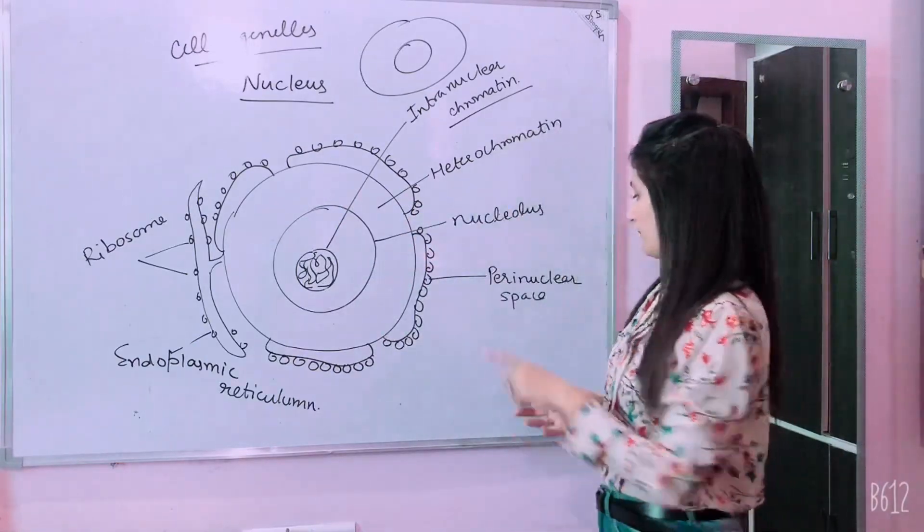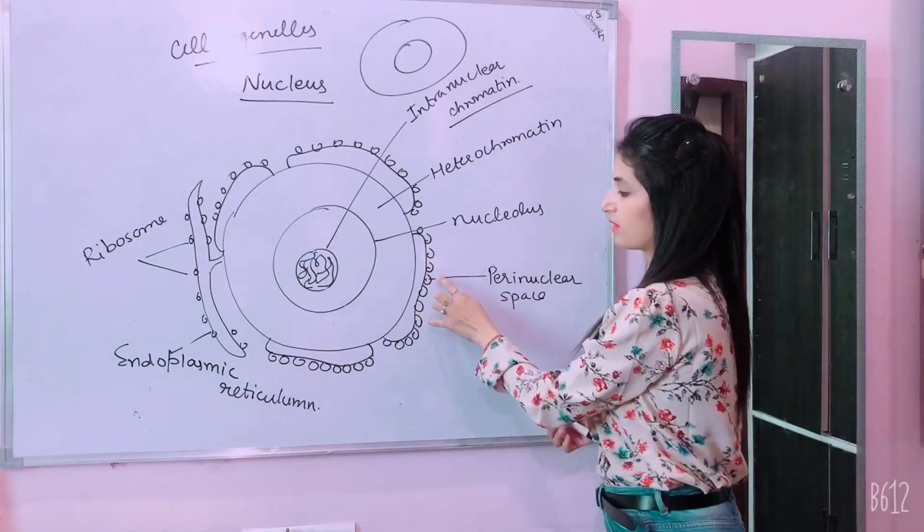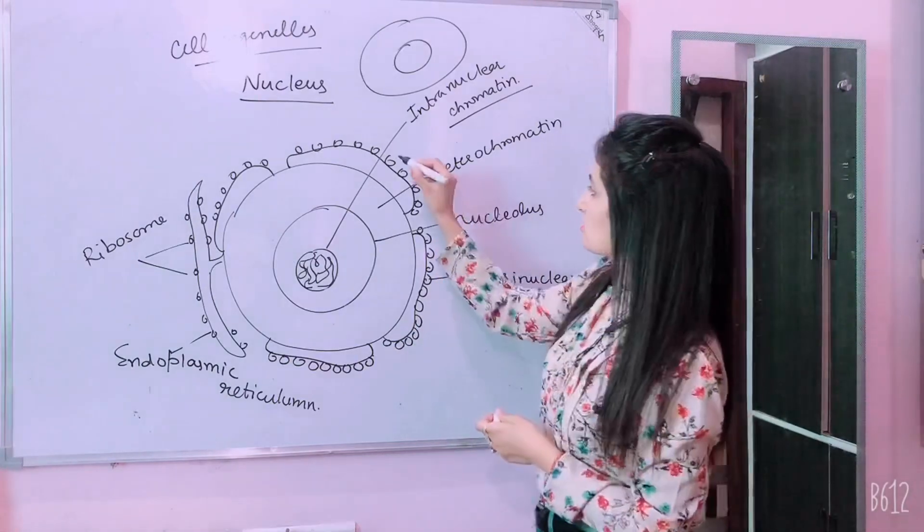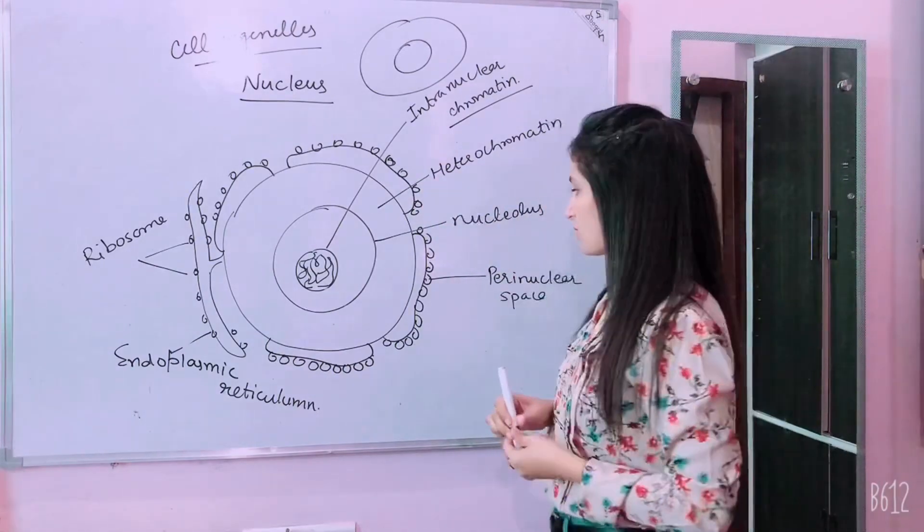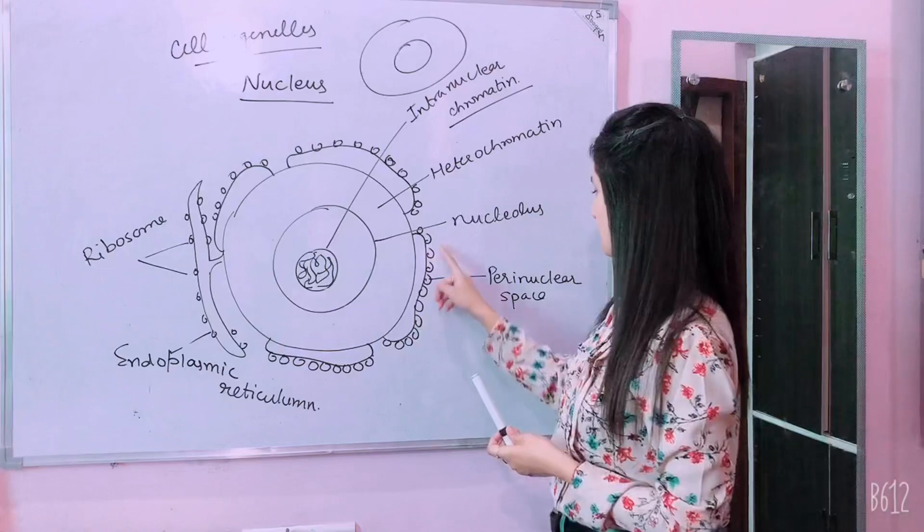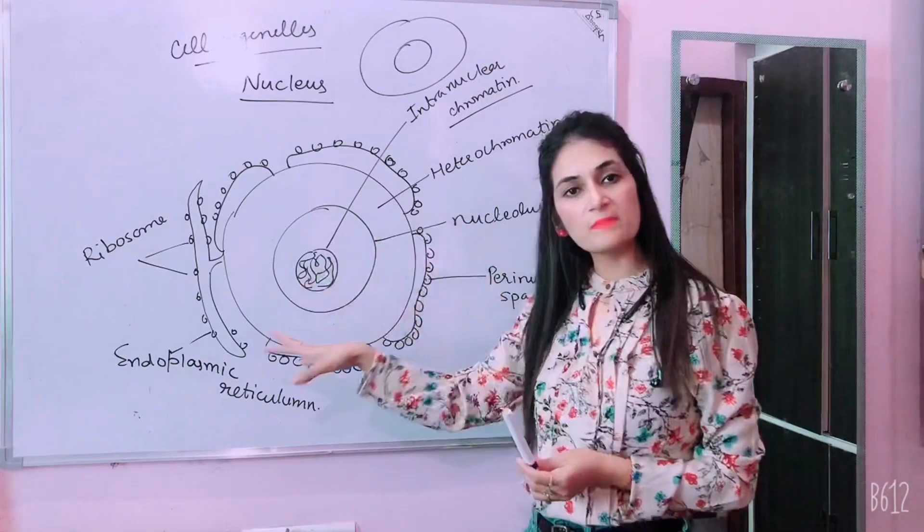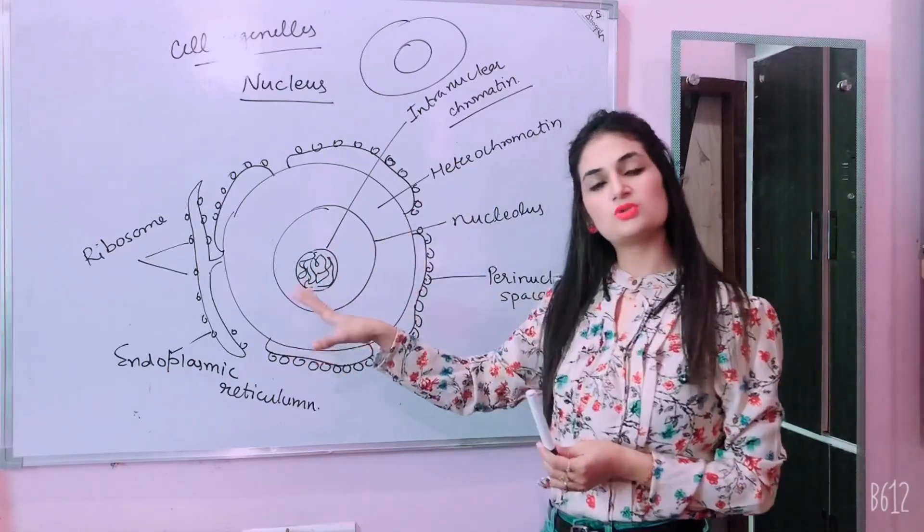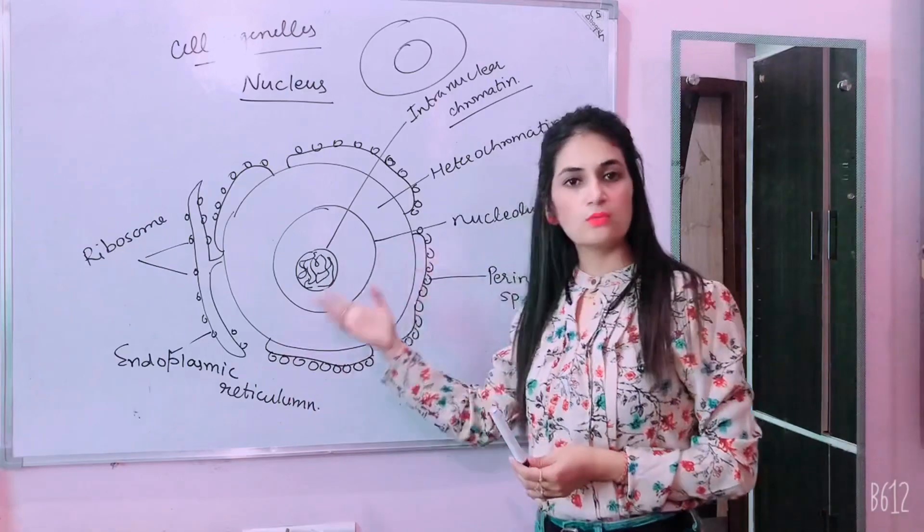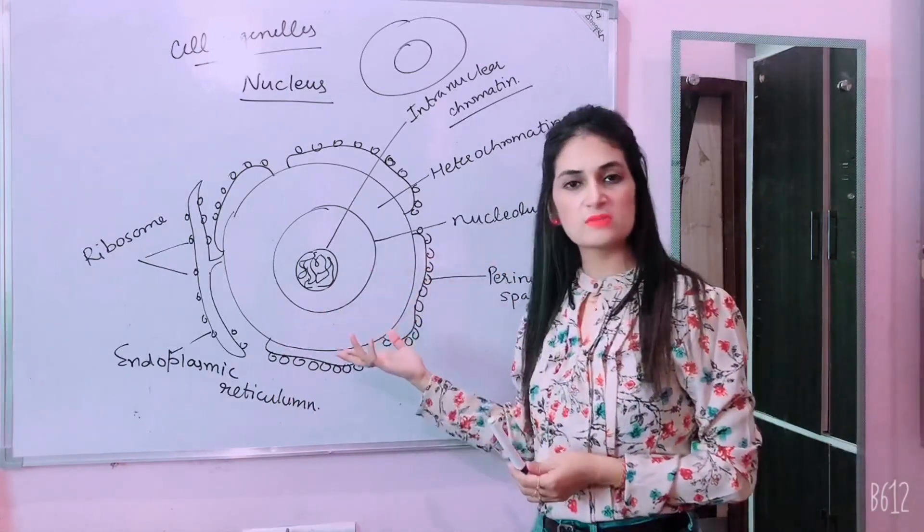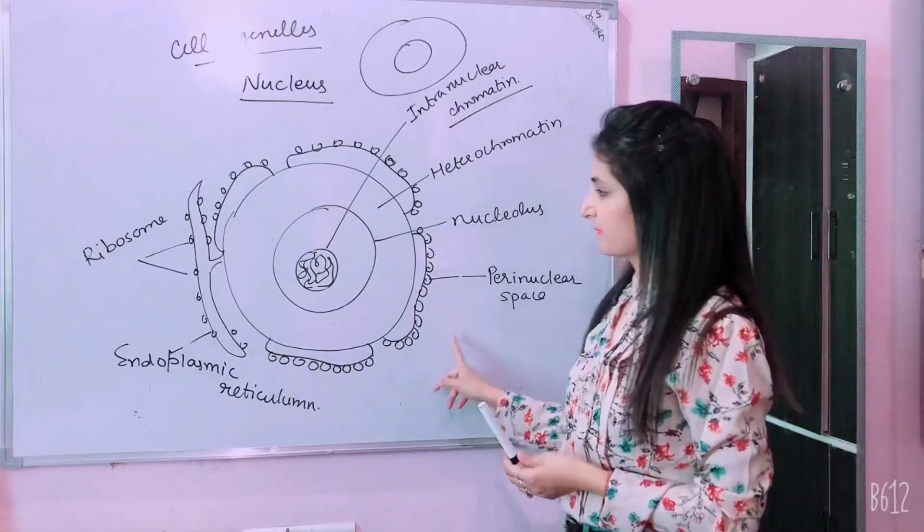So what is the perinuclear space? This space is called ribosomes. So ribosomes are called perinuclear space. It means that in the nuclear space, which will go through proteins and the rest of the material, amino acids, they will also exchange nucleus with cells. So who will do it? Perinuclear space.